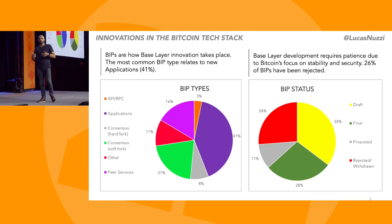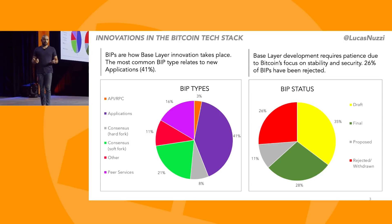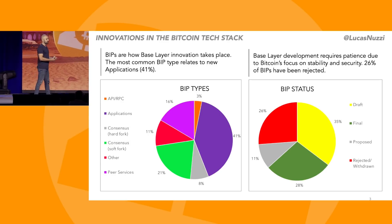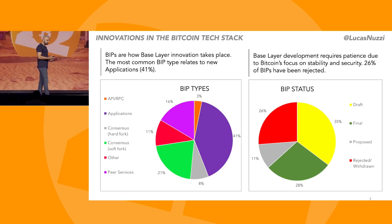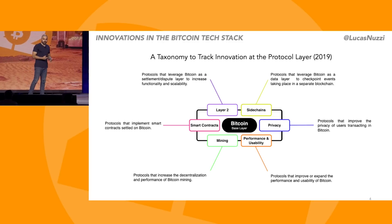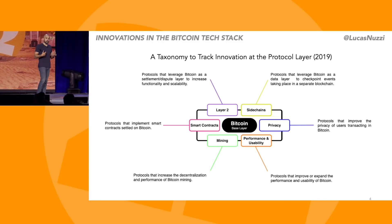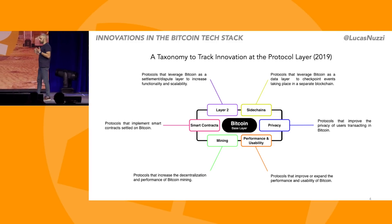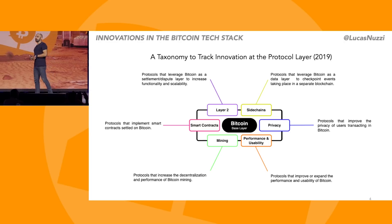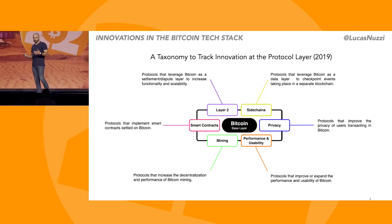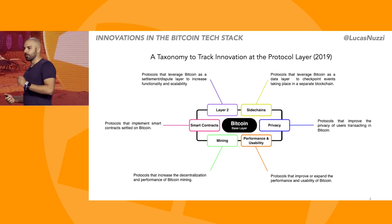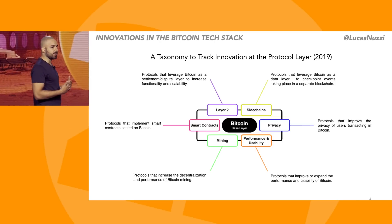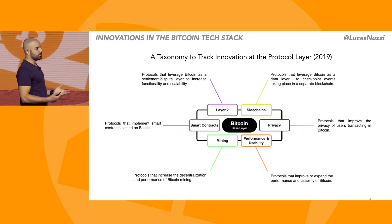When you think about the protocol layer — the protocols that are using these BIPs to innovate — there hasn't really been the same level of standardization, because it is up to you to actually build an application around that. So in 2019, I created a taxonomy to help contextualize how this type of innovation is happening in Bitcoin. I created six categories: sidechains, privacy protocols, performance and usability protocols, mining protocols, smart contracts, and layer two solutions like Lightning.